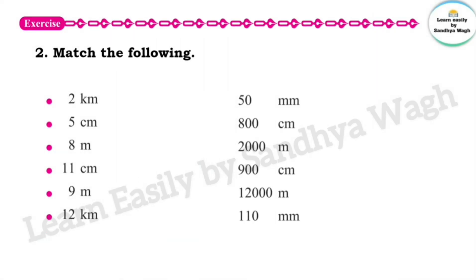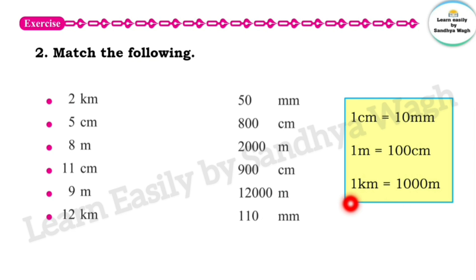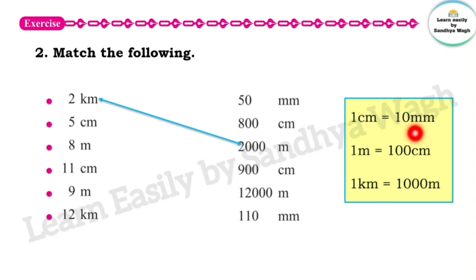Now the next question: match the following. 2 kilometers is equal to how many meters? 1 kilometer is equal to 1000 meters, so 2 kilometers is equal to 2000 meters. Next, 5 centimeters is equal to how many millimeters? 1 centimeter is equal to 10 millimeters, so 5 centimeters is equal to 50 millimeters.